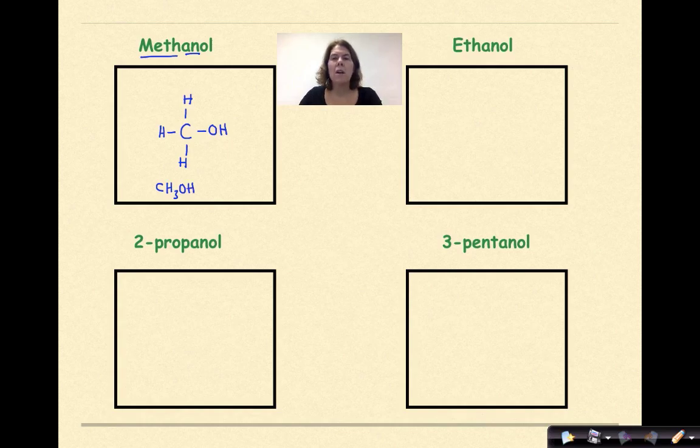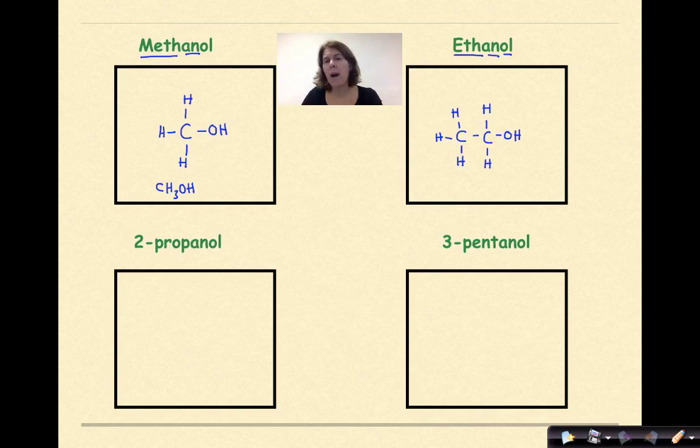Now let's do ethanol. We have ETH, two carbons, AN meaning single bonds between the two carbons, and then -ol saying you have an alcohol here. I'm going to put the alcohol right off the end here. I have lines representing the four bonds that each carbon can have, and then I'm going to fill each bond in with a hydrogen. I'm putting it at the end because it's going to make it easier when I do my condensed structural formula. So when I write this out, I'm going to write CH₃CH₂OH. And it's that OH on the end that indicates you have an alcohol present.